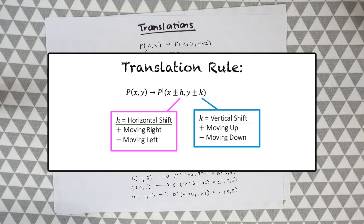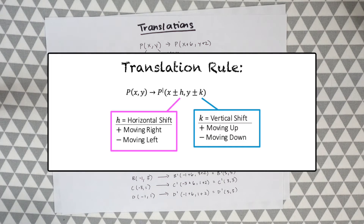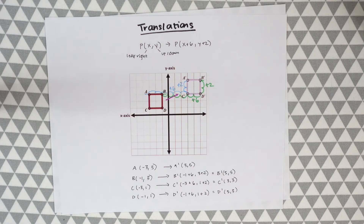Based on this we can make a general rule for all translations. The original point P(x, y) becomes (x ± h, y ± k), where h represents the horizontal shift along the x-axis — adding when moving right, subtracting when moving left. The k represents the vertical shift along the y-axis — adding when translating up, subtracting when moving down.